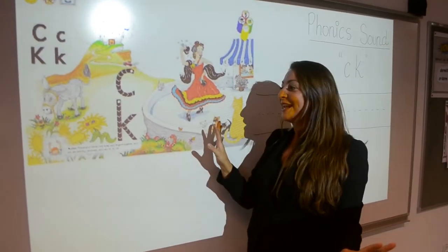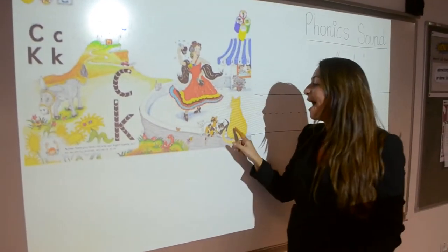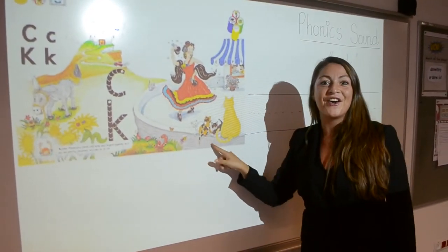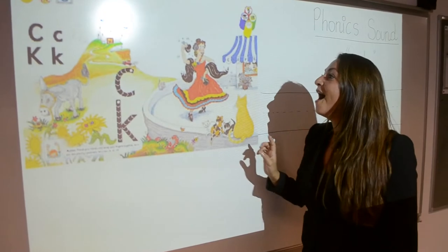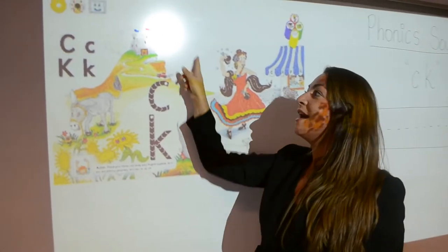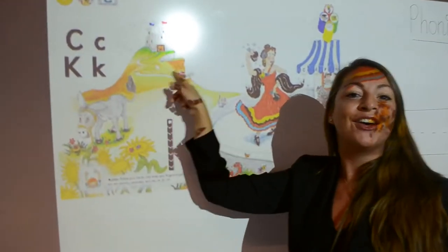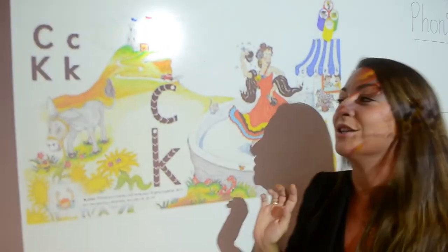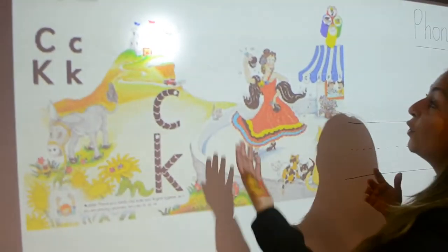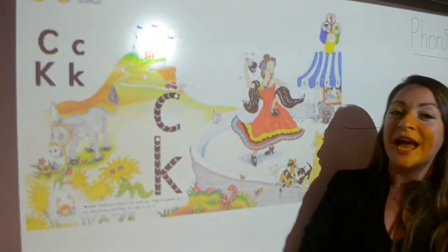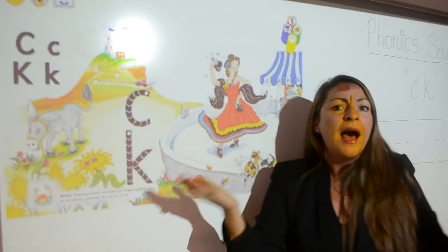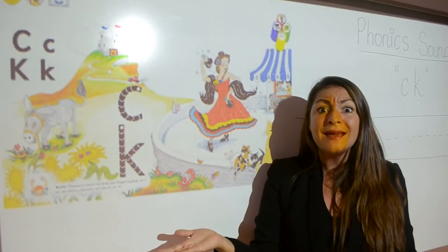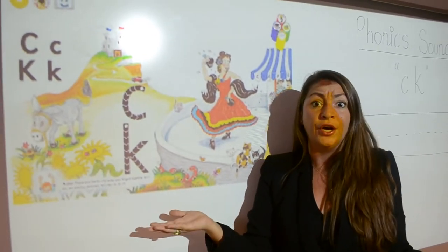Now let's take a look. I see cats. I see a castle, and of course she has castanets. How do we make this letter K?